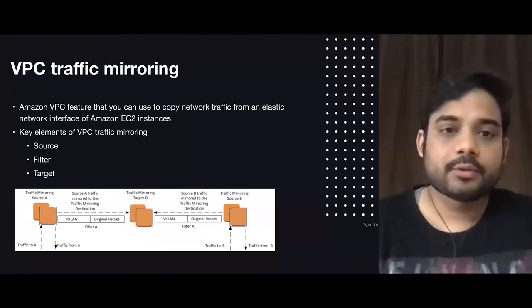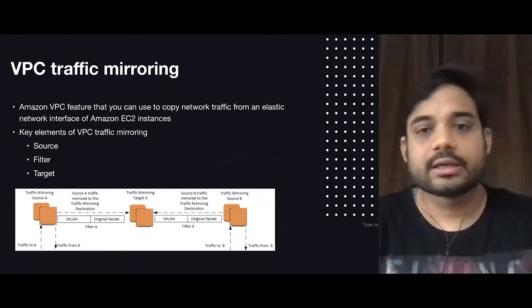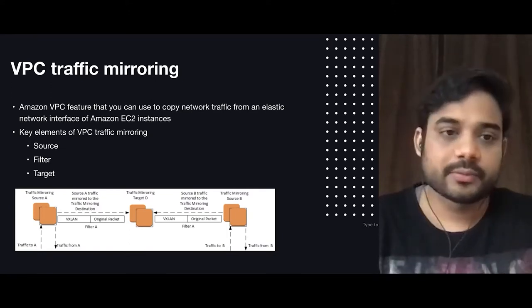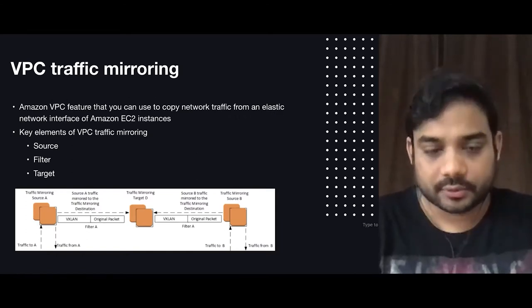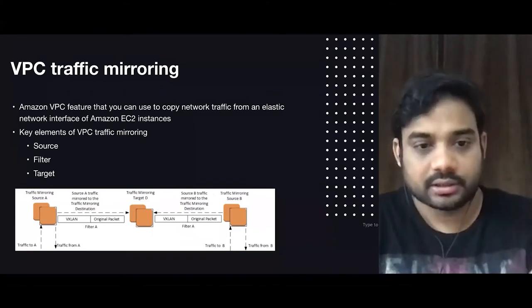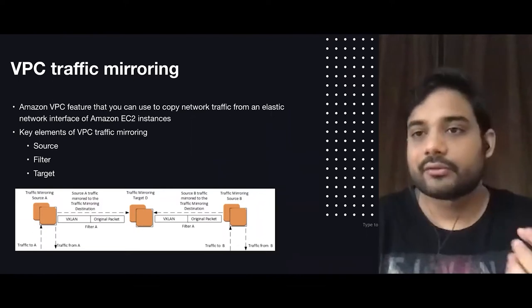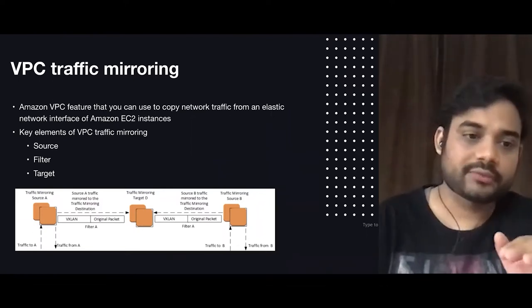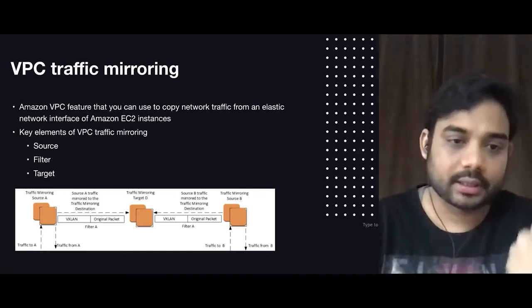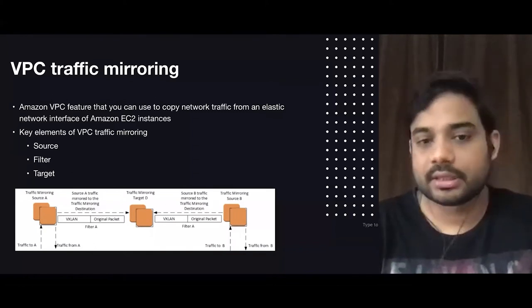VPC traffic mirroring is a feature provided by AWS using which we can copy network traffic from an elastic network interface of an Amazon EC2 instance to a destination — the destination could be an EC2 instance or a load balancer. There are three main key elements: source, filter, and target or destination. The source sends mirror traffic to the target. Whatever traffic is flowing through the source, whether incoming or outgoing, VPC traffic mirroring will copy the exact traffic, encapsulate it into VXLAN packets, and send that traffic to the mirroring target, which could be running Suricata and Zeek. There can be multiple sources and multiple destinations.